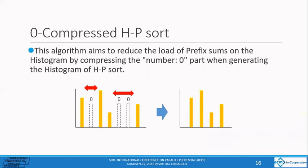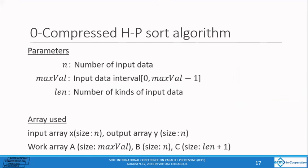And then we'll talk about zero-compressed HP-sort. The zero-compressed HP-sort is an algorithm that aims to reduce the load when applying the prefix sums to the histogram by compressing the number zero paths when generating the histogram a of the HP-sort. As algorithm parameters, in addition to n and max val, which are similar to HP-sort, len which represents the number of kind of input data is used. The array uses the work array c of size len plus 1 instead of a_p.